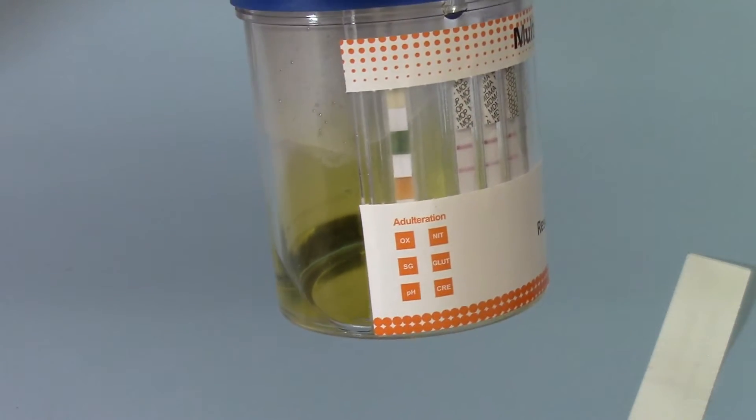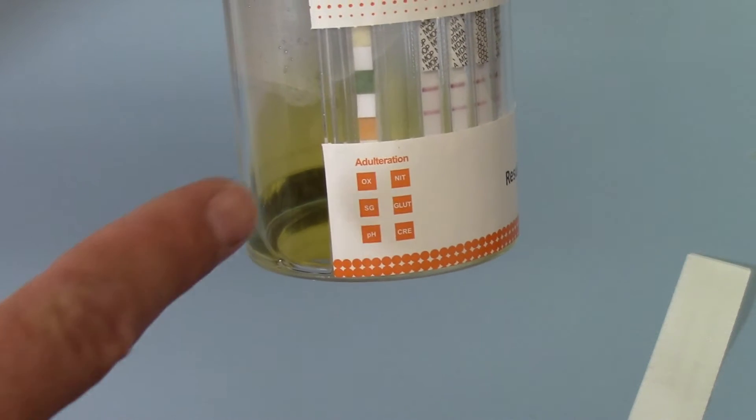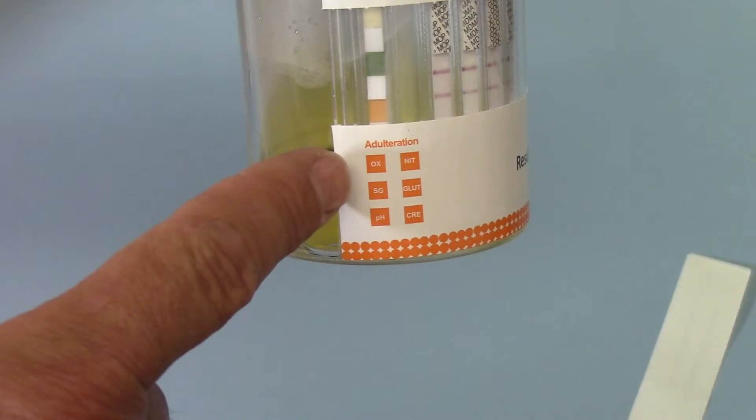Now, the first element of this is your adulteration test strip here. For this, included in the test will be an adulteration interpretation card. And you need to match this against the variables that are on the pad here.